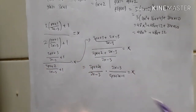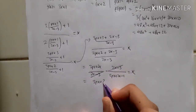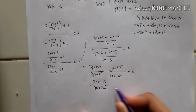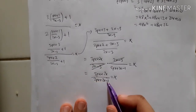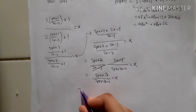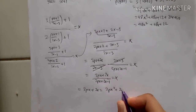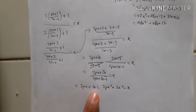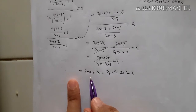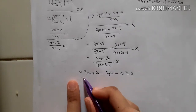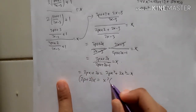Simplifying further: the numerator is 3px + 2x and the denominator is 2px + 2x - 1, set equal to x. Cross-multiplying: 3px + 2x = x(2px + 2x - 1), which gives 3px + 2x = 2px² + 2x² - x.